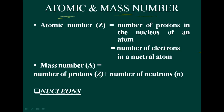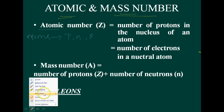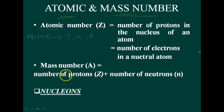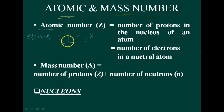Atoms contain mainly three fundamental particles — protons, neutrons, and electrons — except hydrogen. Hydrogen does not contain all three. Atoms containing protons, neutrons, and electrons — since all the elements and compounds have mass, atoms also have mass.